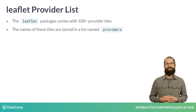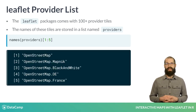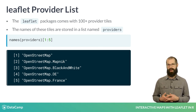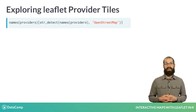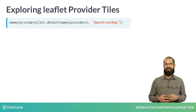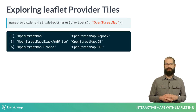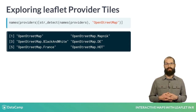For example, to see the first five provider tiles, we call names on the providers list followed by 1:5 in brackets. The first five tiles are all OpenStreetMap tiles, so it might be more useful to print all of the tiles provided by OpenStreetMap, which you can do by using the str_detect function from the stringr package.